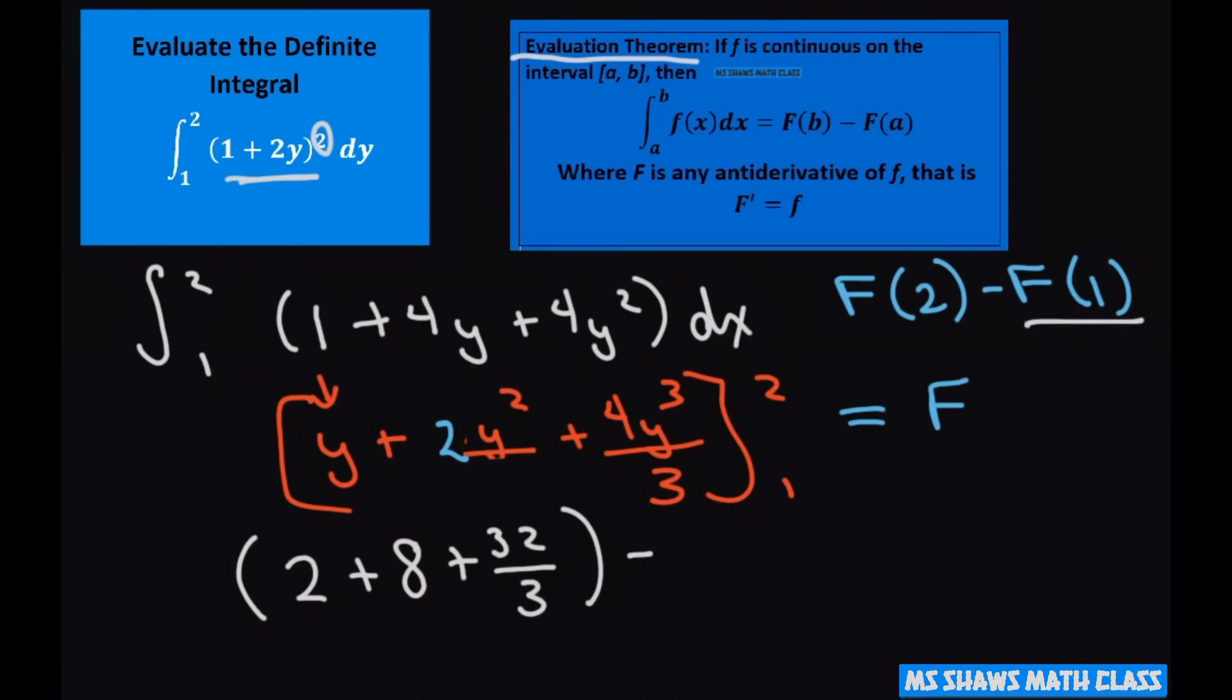and now we're doing f of 1. So that part's a little easy. 1 plus 2 plus 4 thirds.